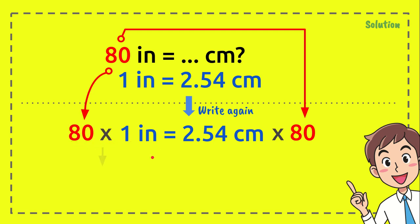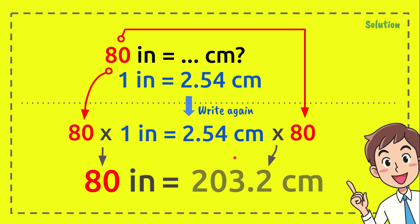Now, 80 times 1 inch equals 80 inches and 2.54 centimeters times 80 equals 203.2 centimeters and that's the answer.